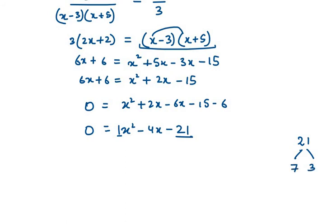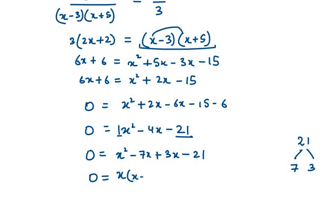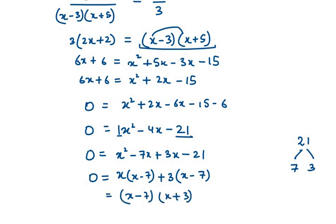Now we apply middle term splitting. Here a is 1 and c is 21, so a times c equals 21. We find factors of 21 that expand the middle term: 7 times 3. So it becomes X squared minus 7X plus 3X minus 21 equals 0, giving us X(X minus 7) plus 3(X minus 7) equals 0, so (X minus 7)(X plus 3) equals 0.